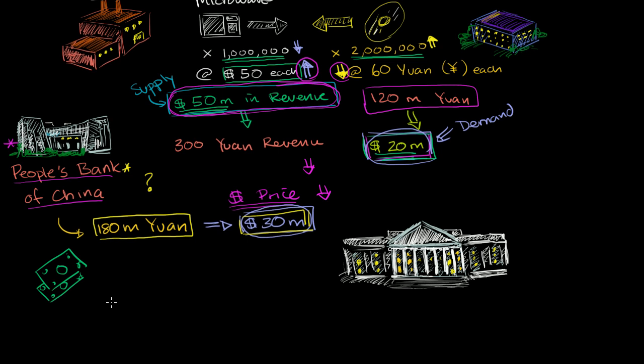And they lend that money by buying US treasury bonds, by buying T-bills and T-notes. So that money that they bought with their printed yuan, that goes to the US treasury. And the US treasury gives the Chinese central bank treasury bonds. So these are treasury bonds.